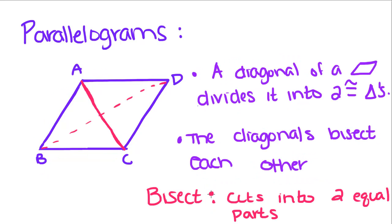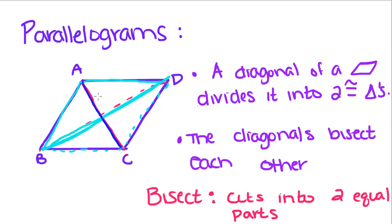Now we're going to talk about diagonals of parallelograms. A diagonal, drawn through opposite angles, divides the parallelogram into two equal triangles. So looking at the first diagonal, the triangle formed on one side is congruent to the triangle formed on the other side. And the same is true for the other diagonal.